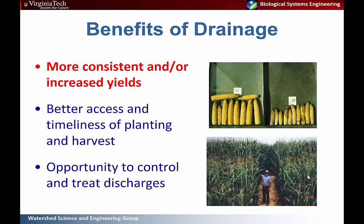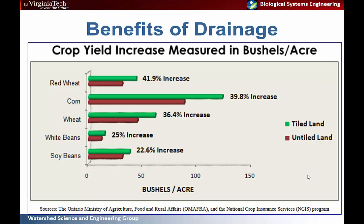As far as the benefits of drainage, you can get increased yield and productivity from your land, and importantly more consistent yields — you don't have to worry about variability year to year as driven by precipitation. This graphic from the Canada Ministry of Agriculture demonstrates that yield increases with drainage occur across a variety of crops. These are region-specific, not reflecting actual increases you can expect here, but they illustrate that corn yield increases in response to drainage are much greater than soy yield increases generally.